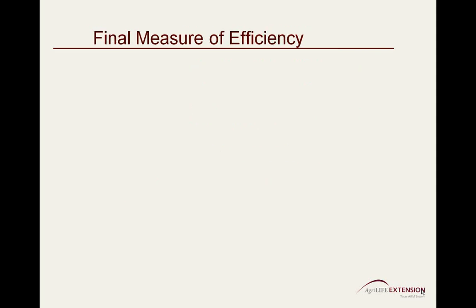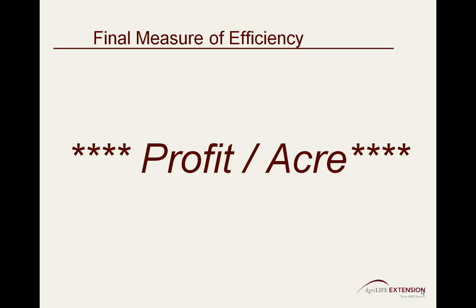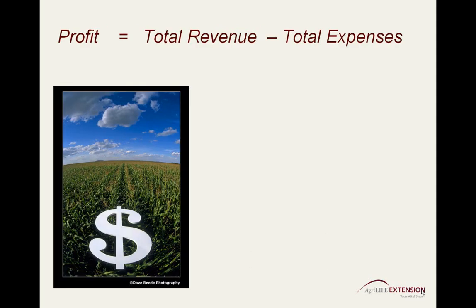The final and most important measure of efficiency is that of profit per acre. It is the cumulative measure of success for any business, irrigated agriculture notwithstanding. Profit is very simply expressed by this equation: total revenue minus total expenses.